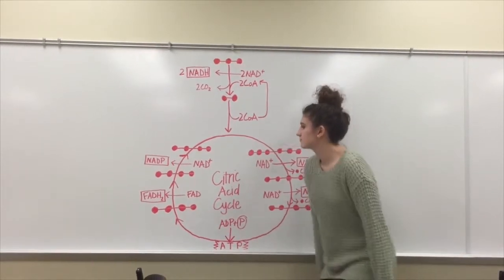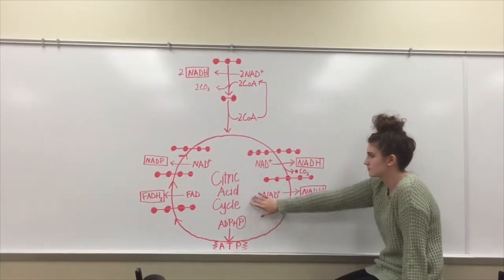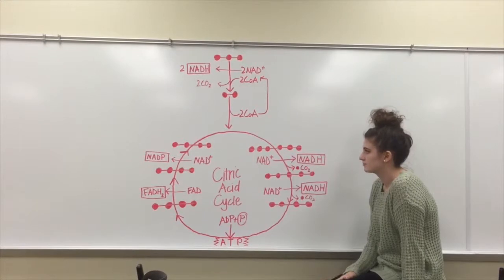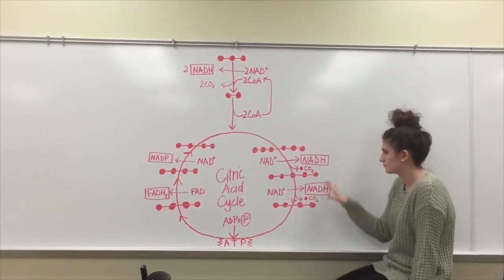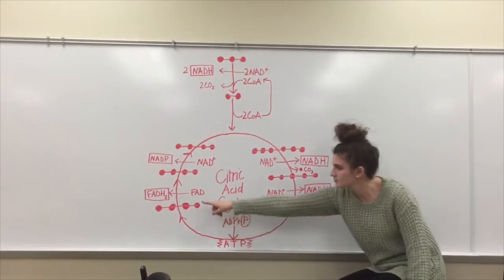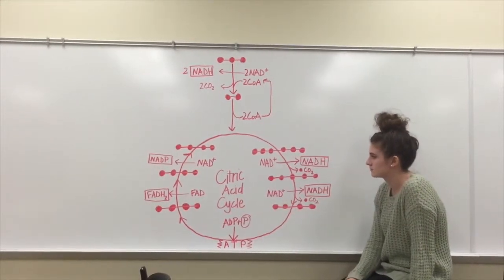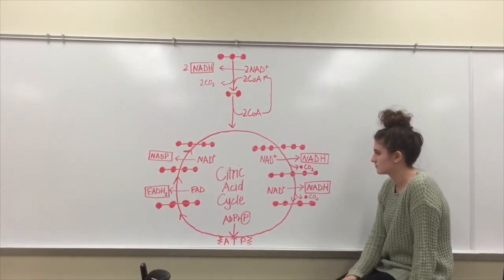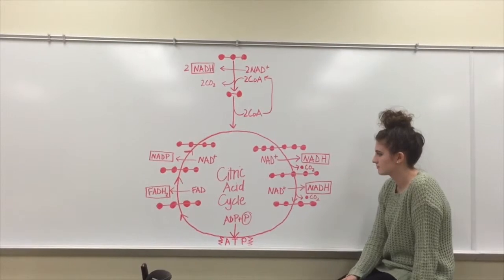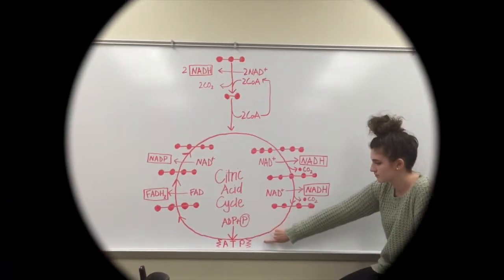The citric acid cycle also takes place in the matrix of the mitochondria. As oxidation occurs, NADH and FADH2 result and more CO2 is released. The citric acid cycle is able to produce two ATP per glucose molecule.